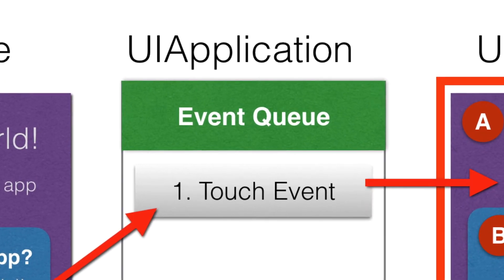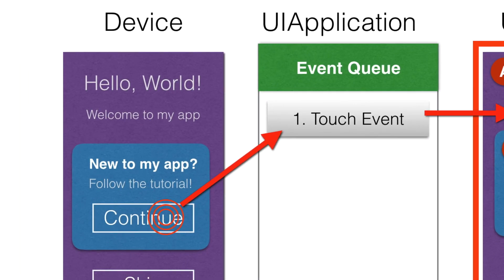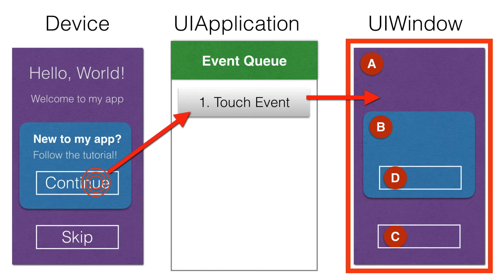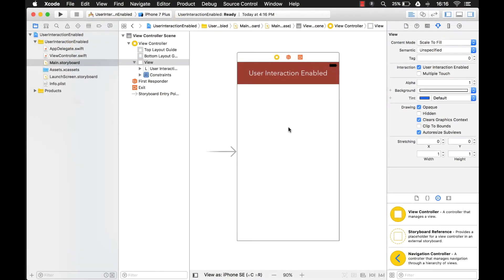You notice the UIApplication has that event queue — this is where the userInteractionEnabled property comes into play. If userInteractionEnabled on that Continue button was false, that touch event would never even enter the event queue. If it's true, which is the default for UIButtons, it'll enter the event queue and pass that touch event to the UIWindow, which will find out which control was pressed and can respond to that touch event.